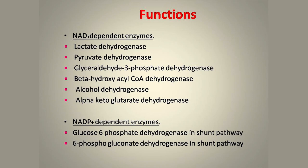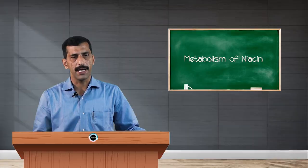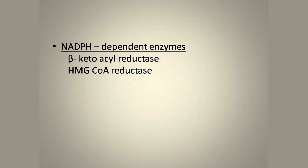There are two enzymes which require NADP+ as a coenzyme, both operating in the hexose monophosphate shunt pathway. Glucose-6-phosphate dehydrogenase is the very first reaction of the HMP shunt pathway, where glucose-6-phosphate is converted to gluconate with NADP+ being reduced to NADPH. Another reaction in the oxidative phase of the HMP shunt pathway uses 6-phosphogluconate dehydrogenase. Additionally, beta-ketoacyl reductase and HMG-CoA reductase also require NADPH as a coenzyme.